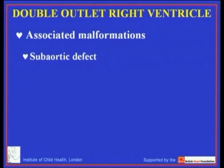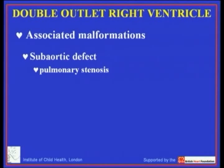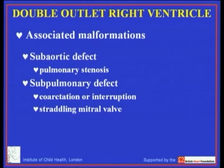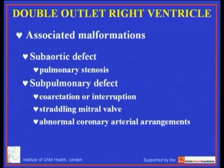With the subaortic defect, associated malformations that go hand in hand include pulmonary stenosis — tetralogy of Fallot with double outlet fits into this subset. In contrast, with the subpulmonary defect it is much more frequent to have coarctation or interruption, since the aorta retains its infundibular musculature. A frequent associated malformation here is straddling and overriding of the mitral valve, and this whole arrangement with subpulmonary defect can conveniently be considered as part of the Taussig-Bing malformation. Also, since the subpulmonary defect is much closer to discordant ventriculo-arterial connections, we anticipate finding abnormal arrangements of the coronary arteries.